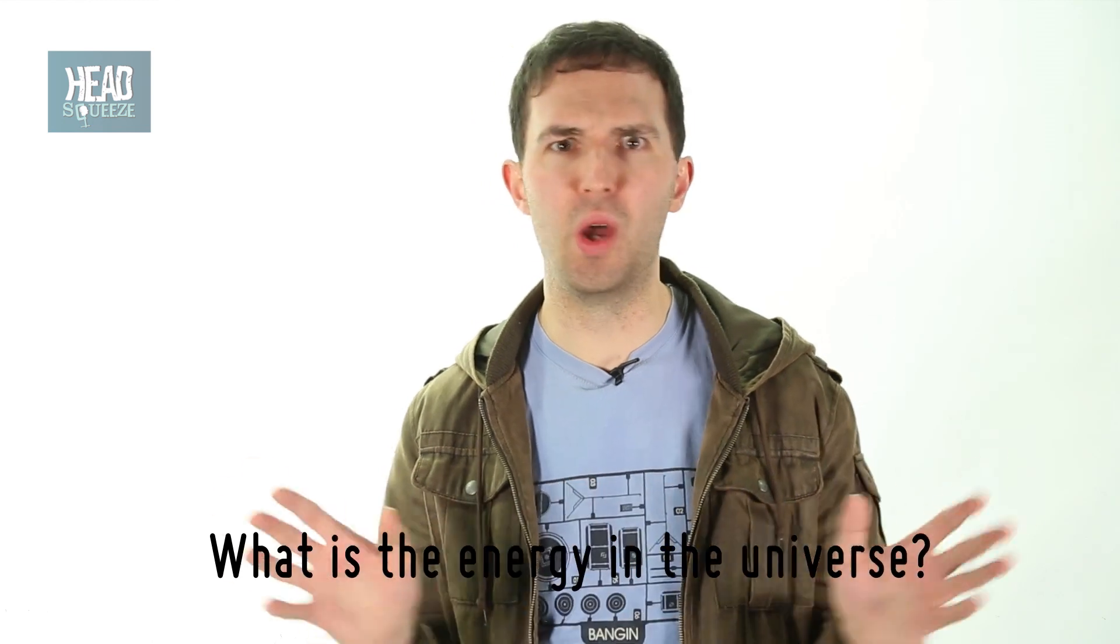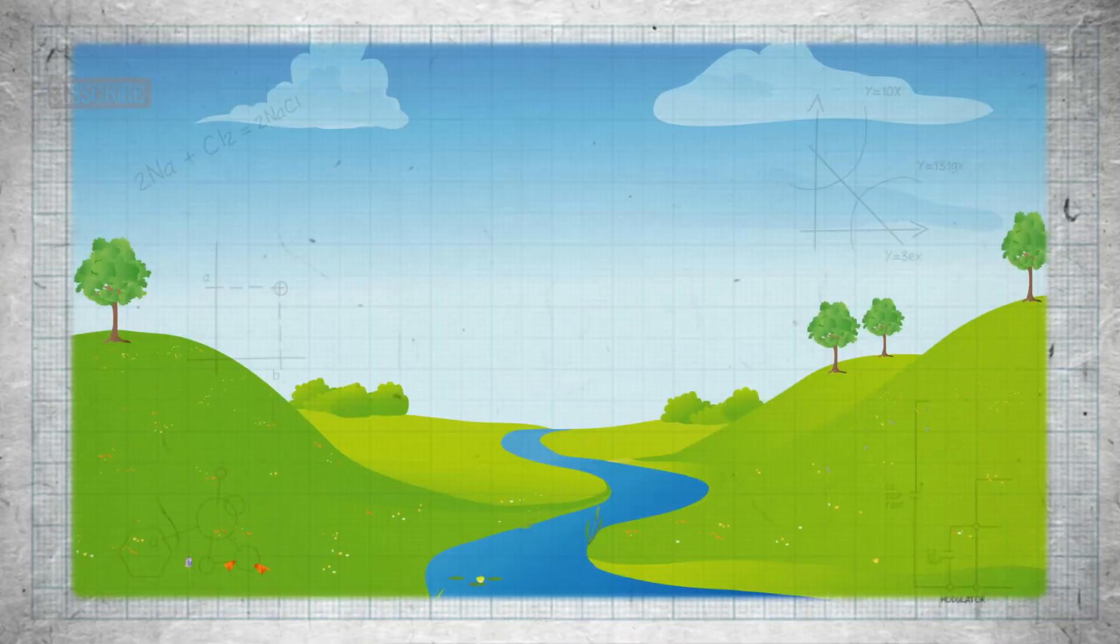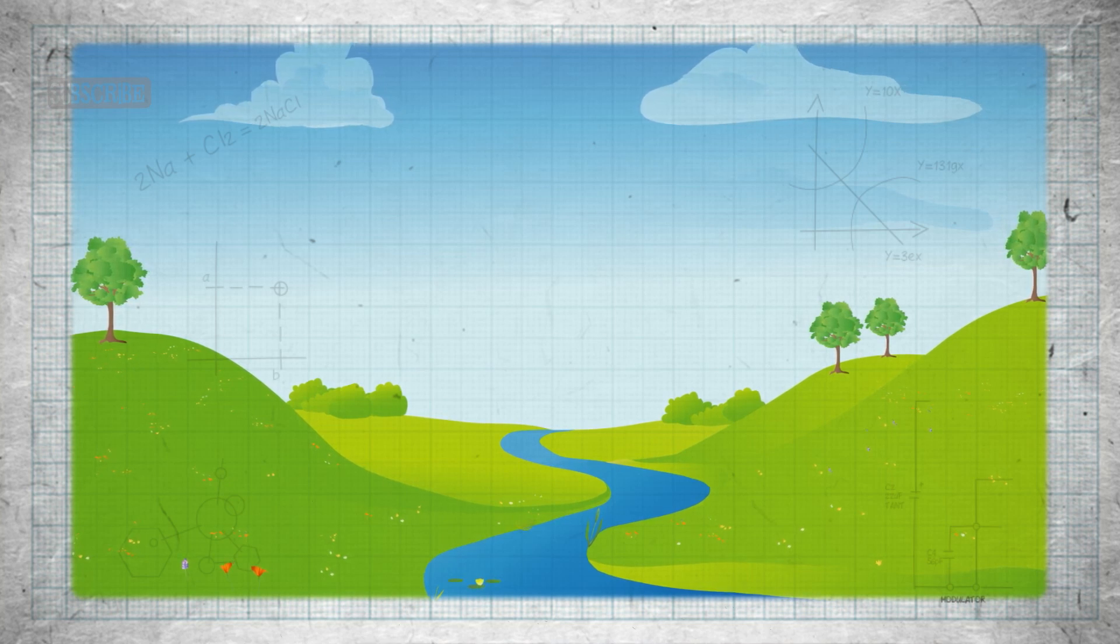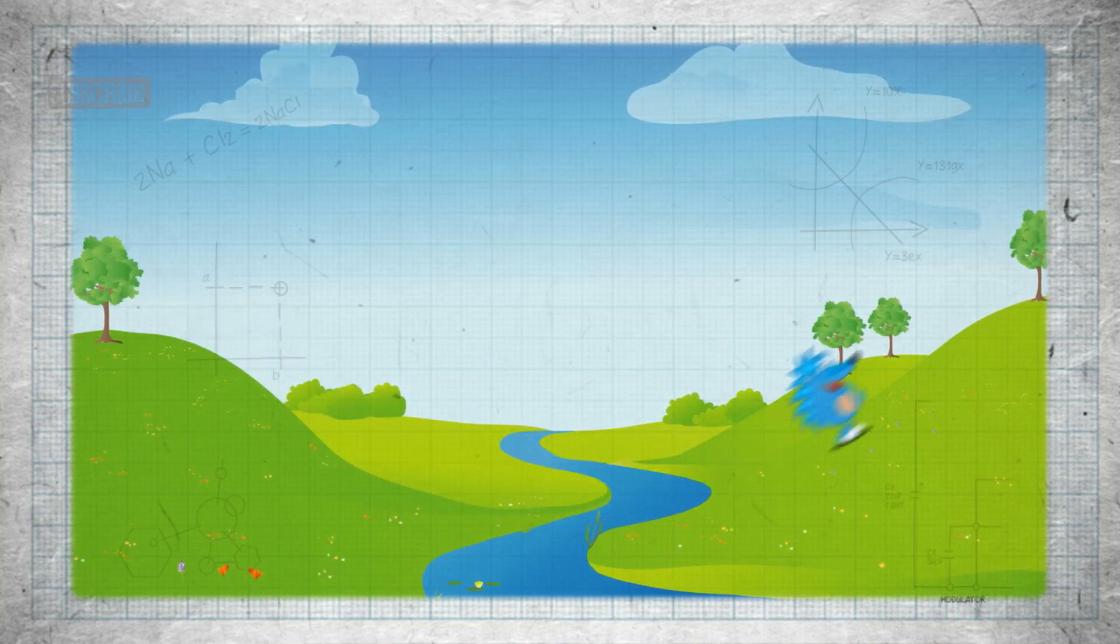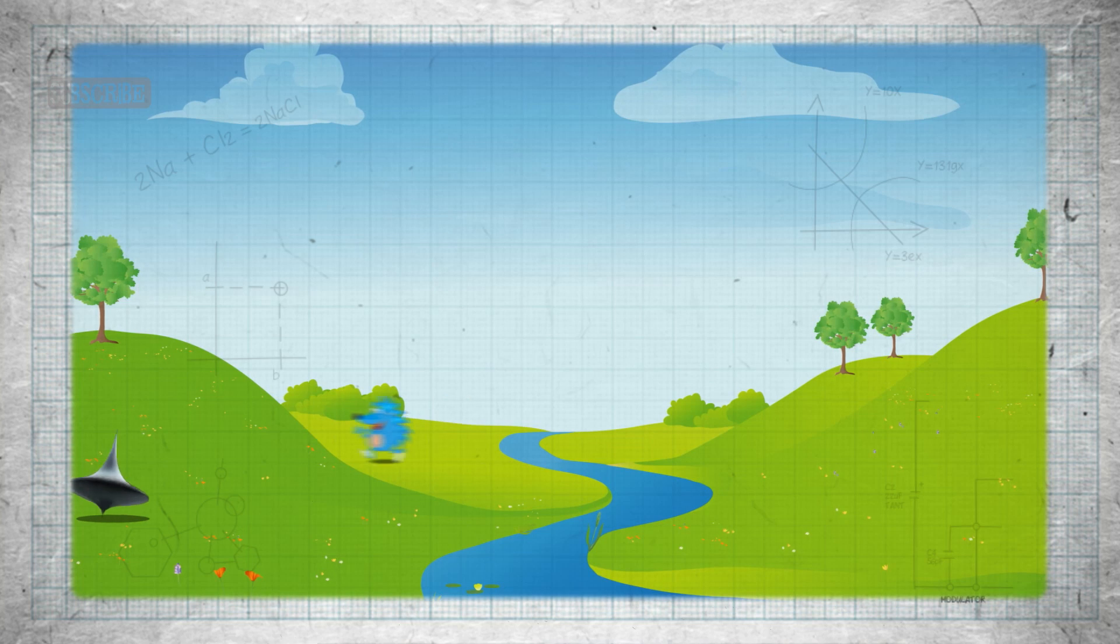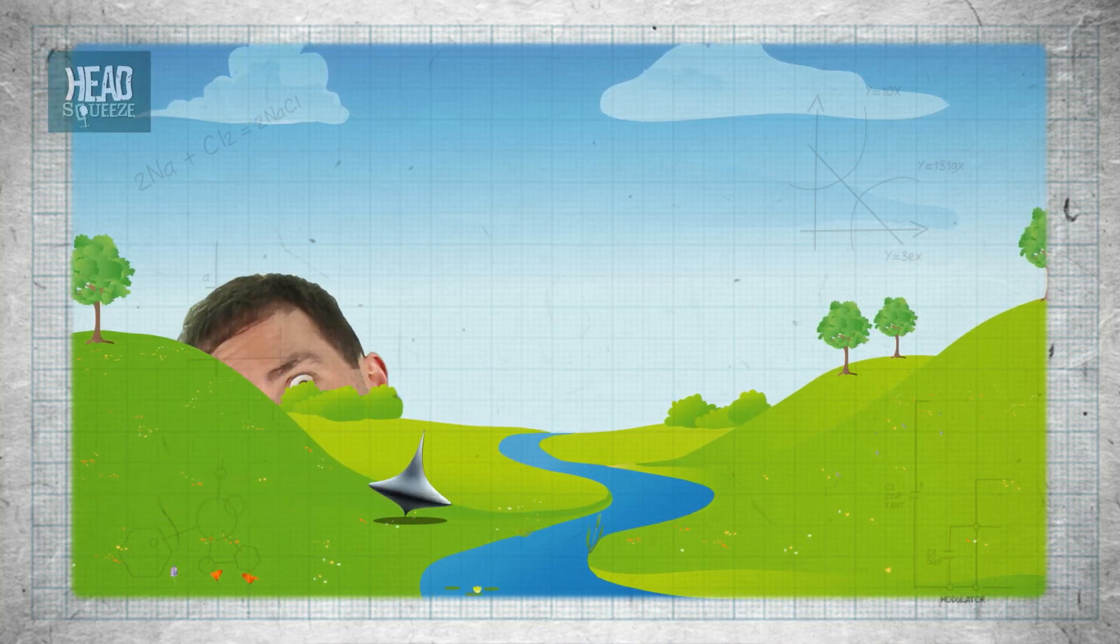This leads us on to the different forms of energy, which there are loads, but they can generally be lumped into two categories. As I said before, kinetic energy is all about motion, be it Sonic the Hedgehog whizzing past Green Hill or a spinning top that tells you whether you're in a dream or not. Apparently I'm not.